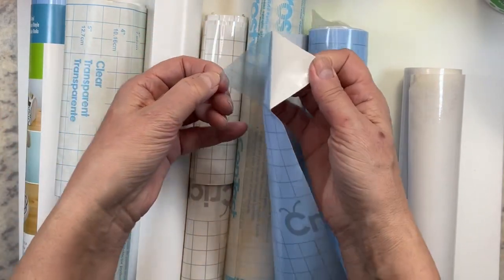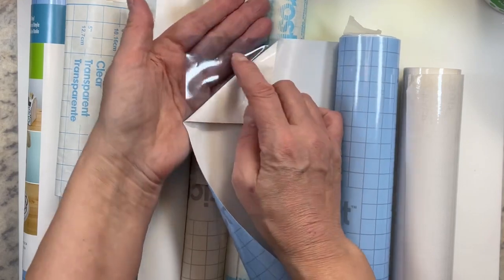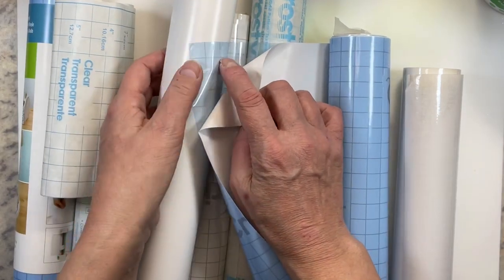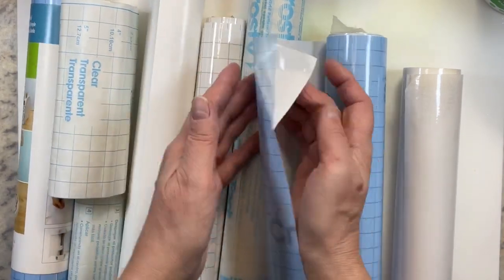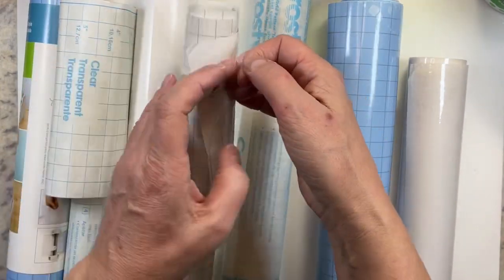I will say though, if it's something like packing tape, it's too strong and it's going to rip your paper. Whatever you do have in your stash, just give it a try. See if you can stick it to your paper and peel it fairly easily off, and then you're away to the races.